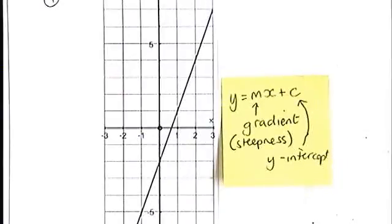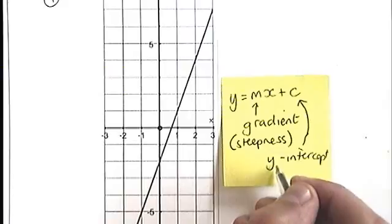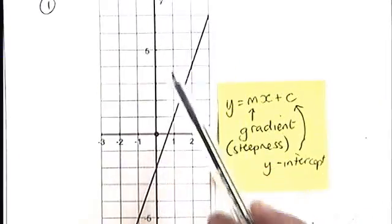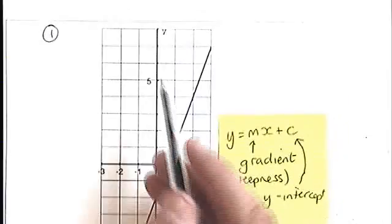So how do we go about finding these two points? Well, let's start with the easiest one, the y-intercept. Y-intercept means where does the line, here's our line, cross the y-axis?